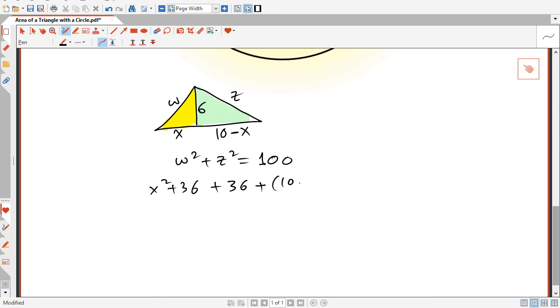And that's equal to 100. So that gives us X squared plus 72 plus 100 minus 20X plus X squared is equal to 100. So 100 cancels out with 100, and we're left with 2X squared minus 20X plus 72 equal to zero.